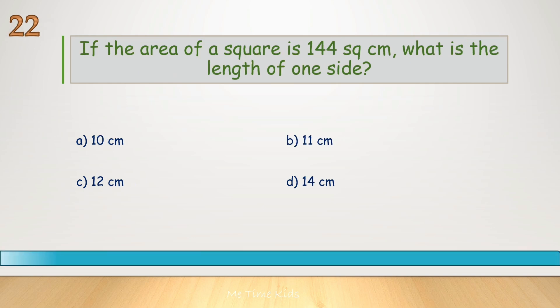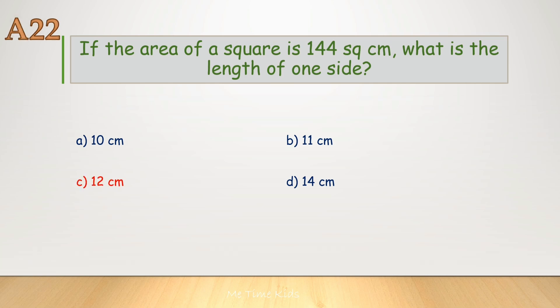If the area of a square is 144 square centimeters, what is the length of one side? Correct answer is C, 12 centimeters.